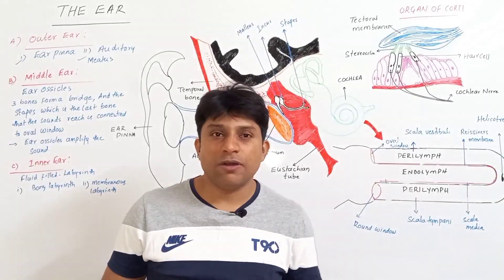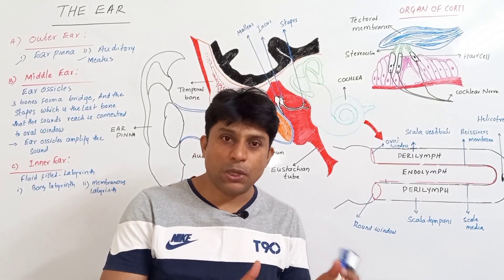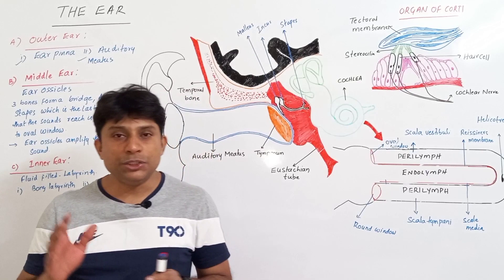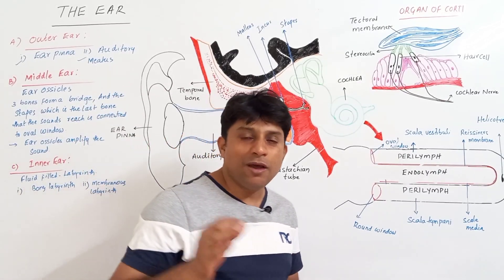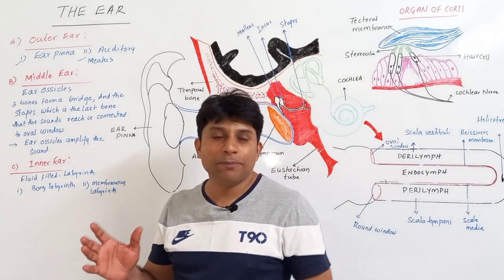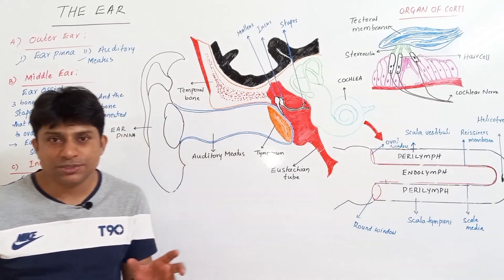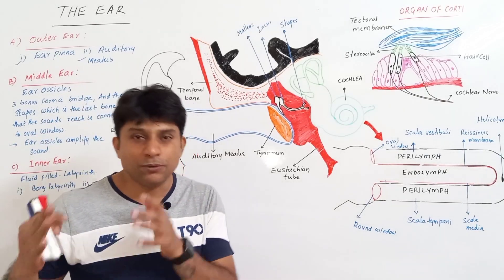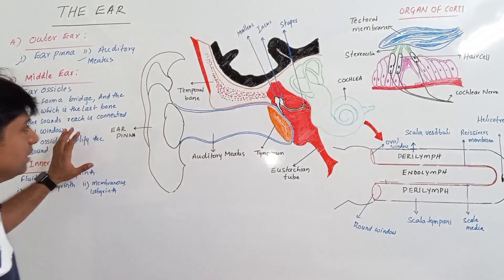Ears are the sense organs that detect and receive sound vibrations and convert them into nerve impulses, due to which we can hear. Hearing is not the sole function of ears; ears also maintain body equilibrium or balance. So the ear performs two functions: hearing and maintaining equilibrium.